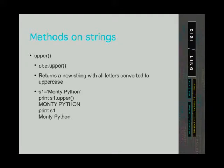First, we state the string the method is called on, then a period, then upper — the name of the method — and then open round bracket and closed round bracket. Nothing goes in the brackets. For example, we can create a string Monty Python and store it in a variable named s1. We can say print s1.upper(). The program returns Monty Python in capital letters.